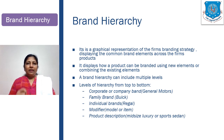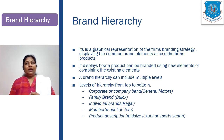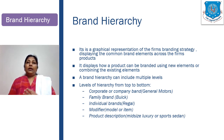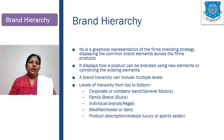A brand hierarchy can include multiple levels. These are different ways to define brand elements and the levels of hierarchy, taken from top to bottom. It could be the corporate or company brand — for example, General Motors — a family brand, individual brands, or modifier level brands. It could also include the product description, such as mid-size luxury or sports sedan.